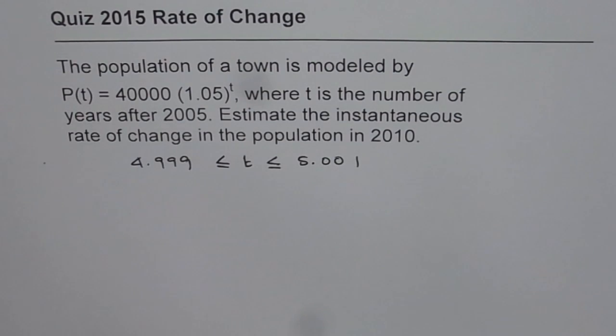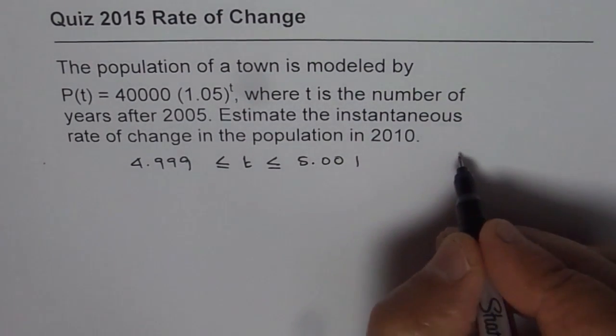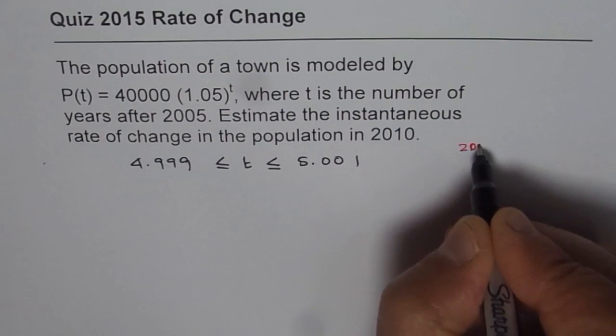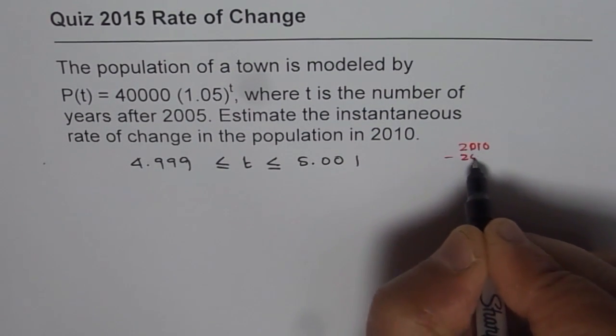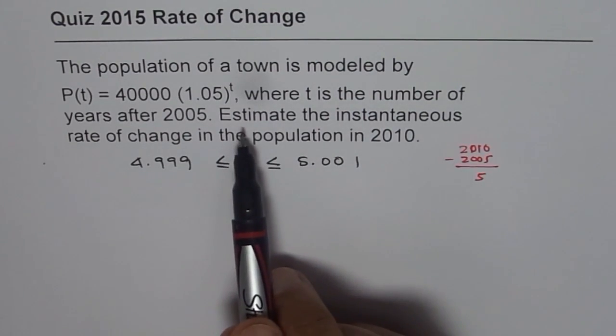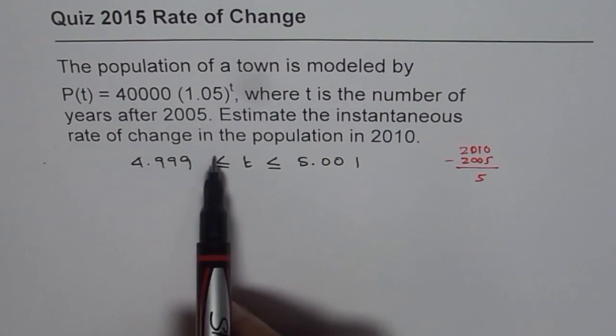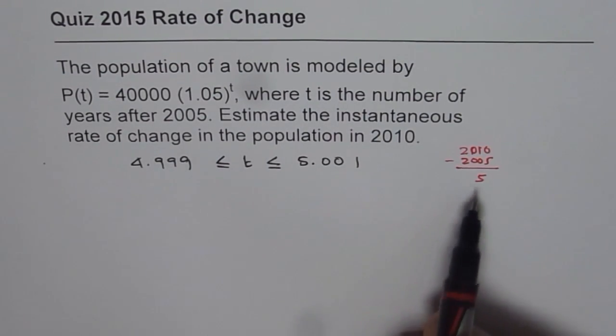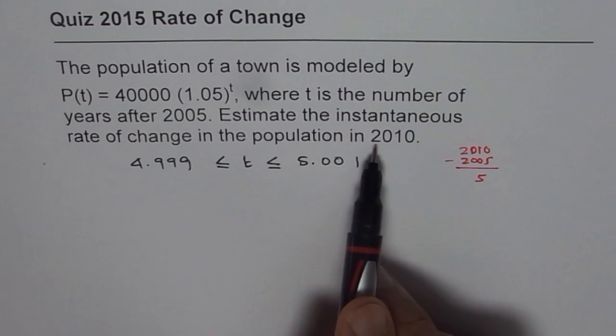Why t equals 5? Since 2010 take away 2005 is 5. So when we are trying to estimate instantaneous rate of change in population in 2010, it would be t = 5. Don't use 2010. That could also be an error.